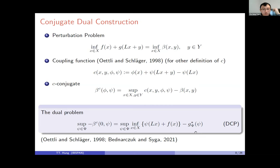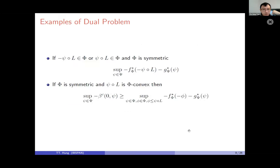No conditions are imposed on phi and psi in the general form. However, if we assume that psi∘l belongs to phi or that phi is symmetric, we obtain a better representation of the dual problem. If psi∘l is phi-convex and can be written as a supremum of phi, we obtain a useful inequality, though we do not always have equality.